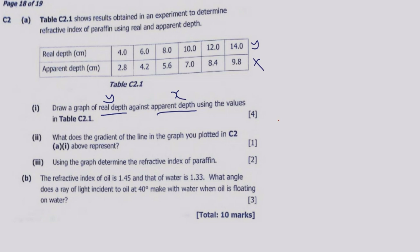The next thing we need to understand is how to split the values equally. Remember the lowest is 4 and the highest is 14, increasing in intervals of 1 to 2. So we can start from 0 and go all the way up to 14, increasing by an interval of 2, to ensure that the graph comes out properly.